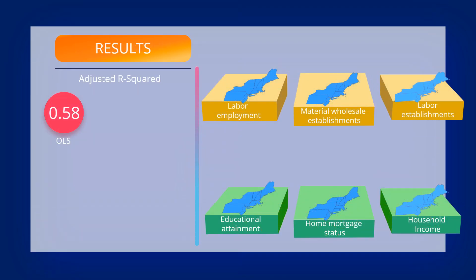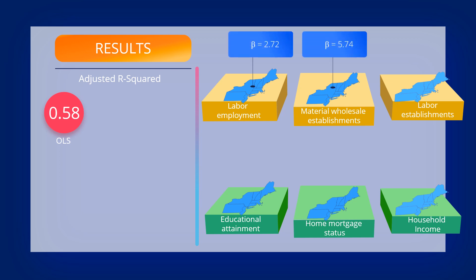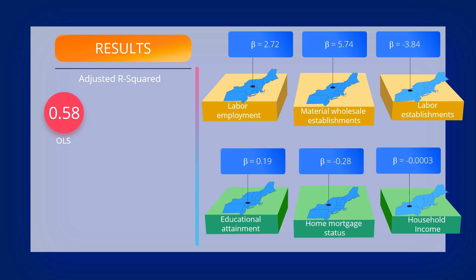With an adjusted R-squared value of 0.58, the OLS model explained about 58% of the variation in median home value growth rate through construction and capital resourcing variables. All variables were found to be statistically significant. Construction labor employment and wholesale establishment were positively correlated with reconstruction outcomes, while labor establishment was negatively correlated. Education was positively correlated, while mortgage and income were negatively correlated with reconstruction outcomes.